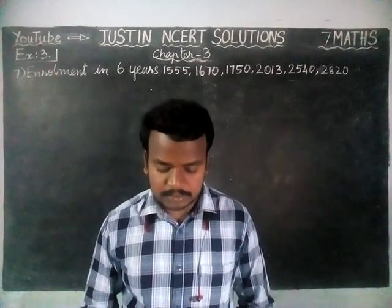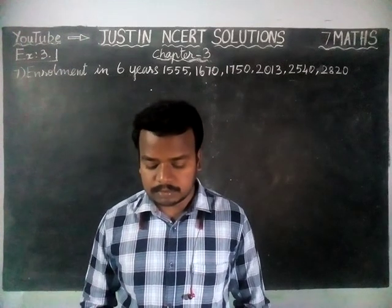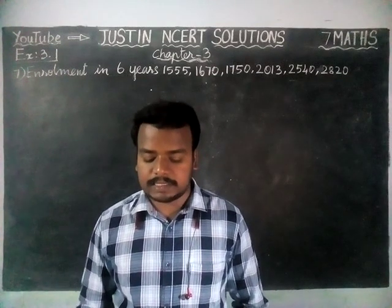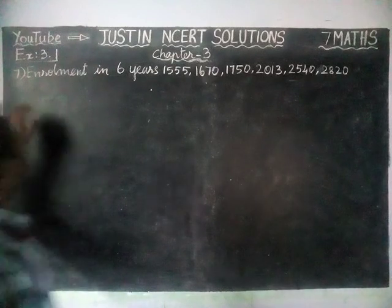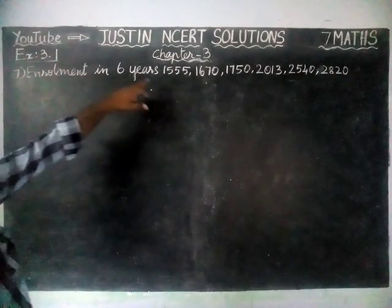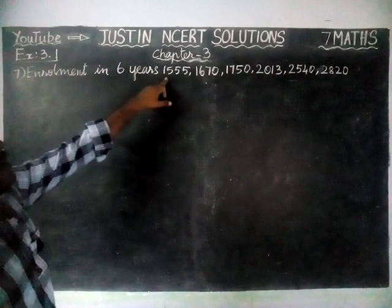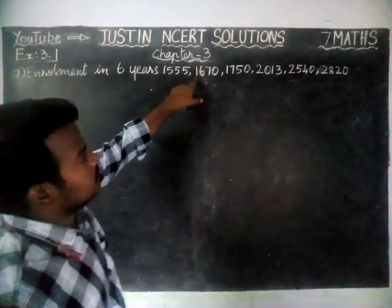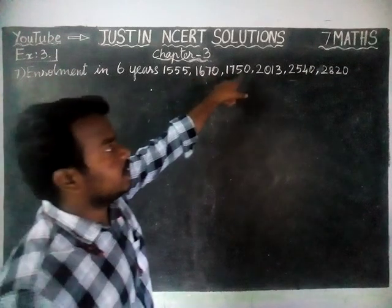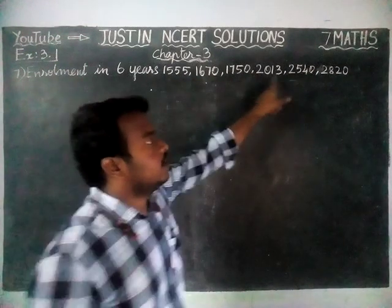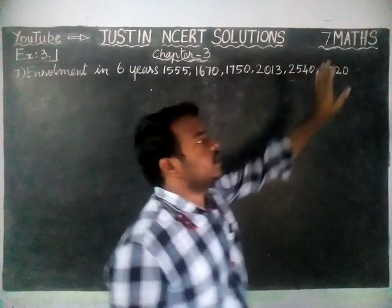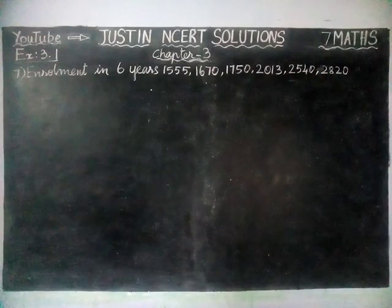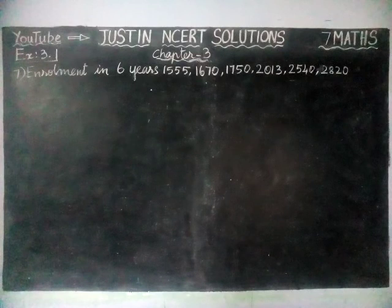Here the question is: The enrollment in a school during 6 consecutive years was as follows — 1555, 1670, 1750, 2013, 2540, 2820. We have to find the Mean Enrollment in the particular period.